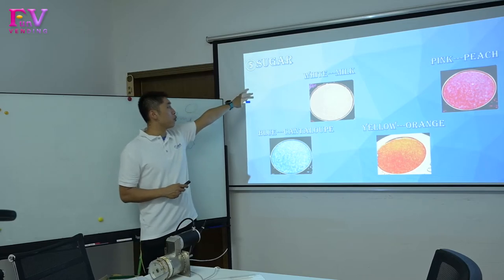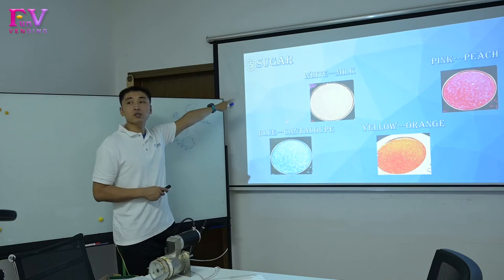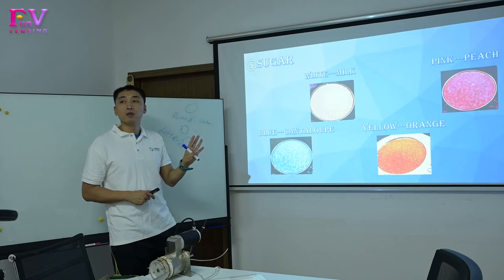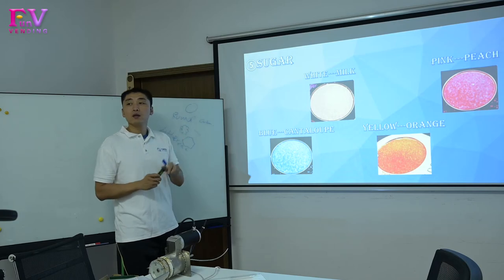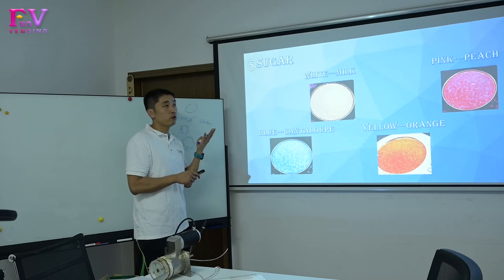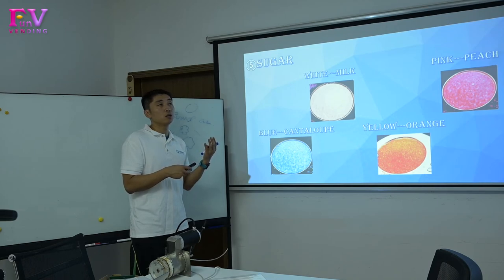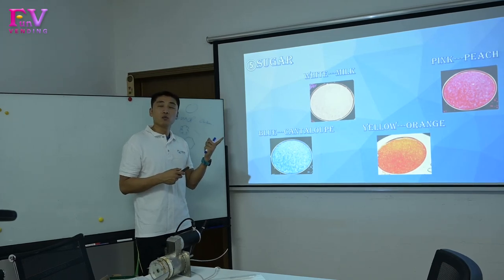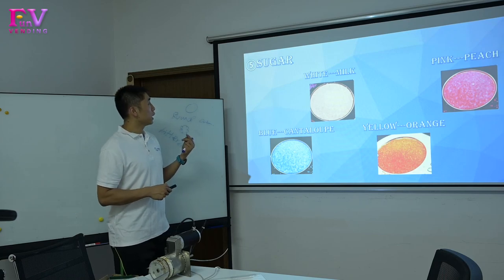When we ship out the machine, we will ship with four kilograms - four colors, one kilogram per color. That means four kilograms with four colors. So when we do the sugar, one set is four colors in four kilograms.